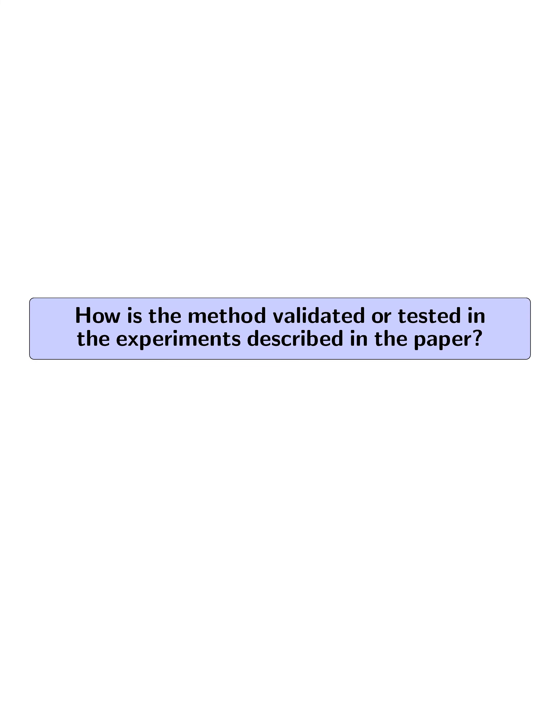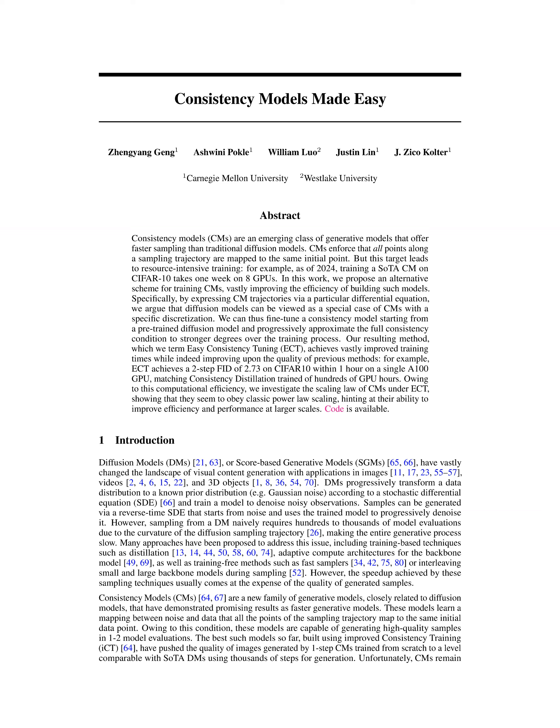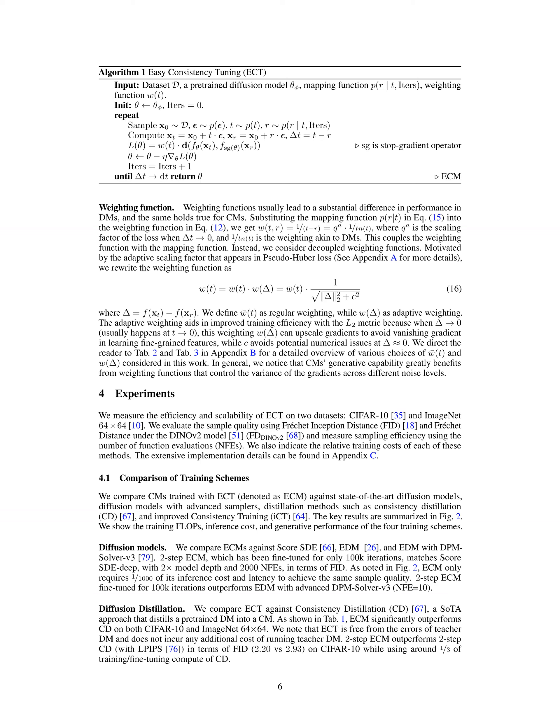How is the method validated or tested in the experiments described in the paper? ECT is validated by comparing consistency models trained with ECT against various state-of-the-art models, including diffusion models, diffusion models with advanced samplers, and distillation methods like consistency distillation, CD, and improved consistency training, ICT. The validation measures efficiency and scalability on two datasets, CIFAR-10 and ImageNet-64x64, using metrics such as Fréchet Inception Distance, FID, and Fréchet Distance under the DINOV2 model, FD_DINOV2. Sampling efficiency is measured using the number of function evaluations, NFEs.